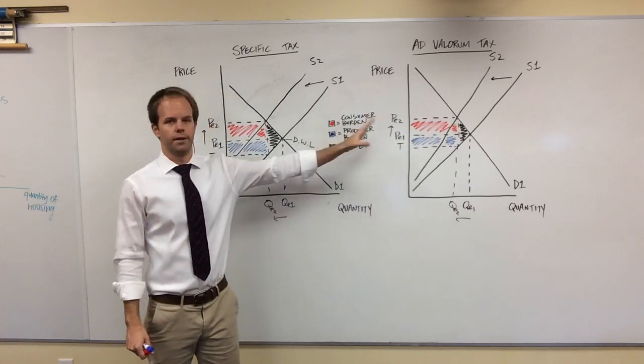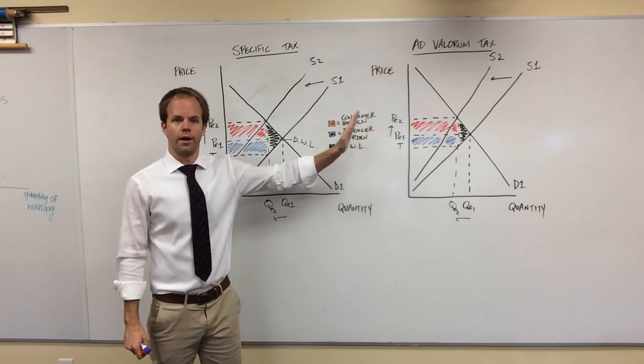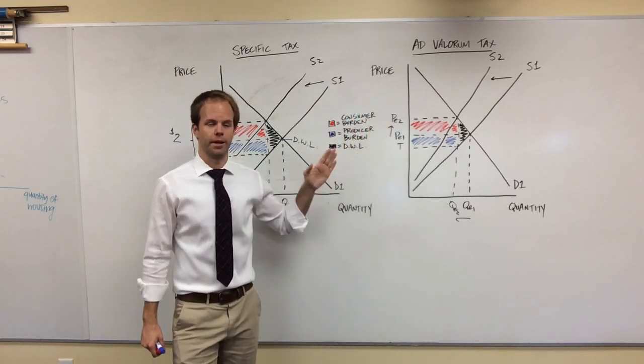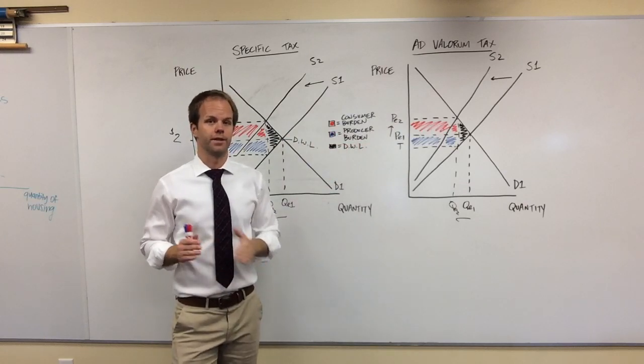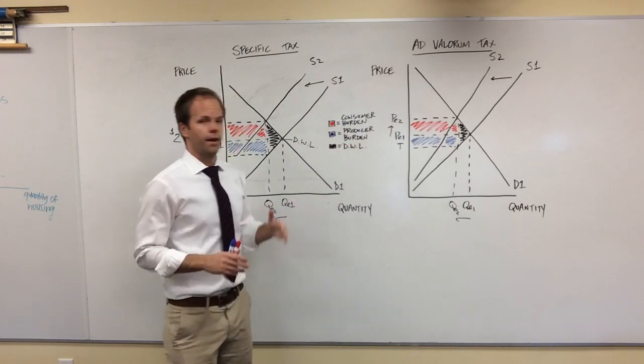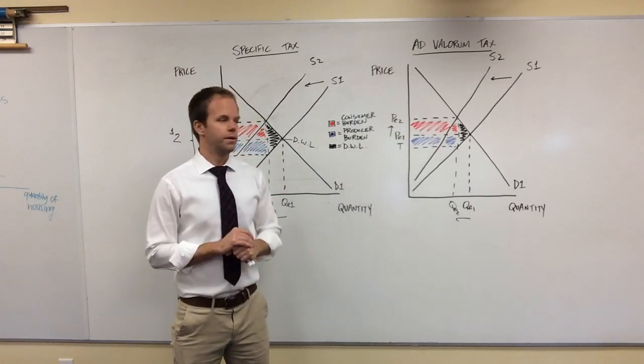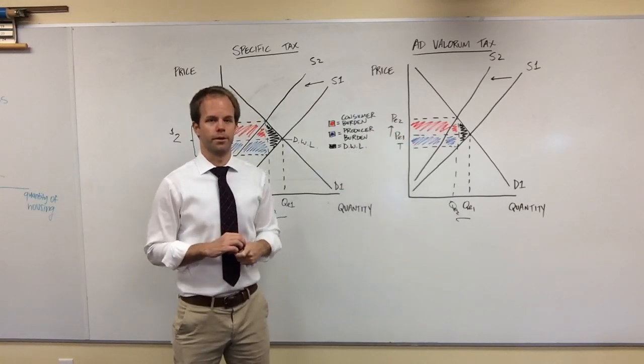Parallel curves here, not parallel curves here. And when a new ad valorem tax has been applied, that price elasticity of supply gets a little bit more inelastic. And when that happens, we have a greater consumer burden than we have a producer burden.